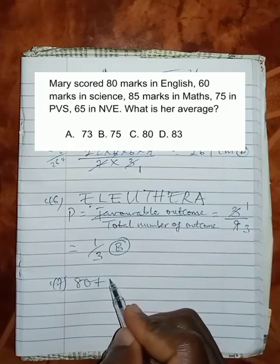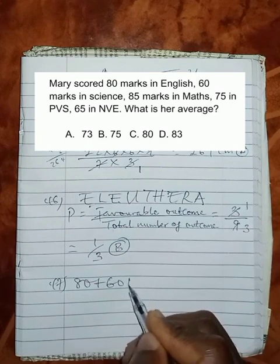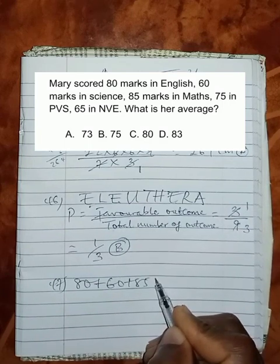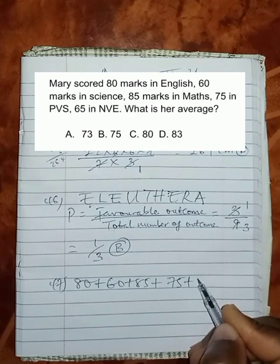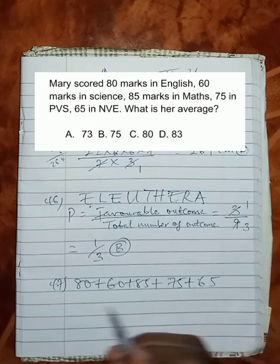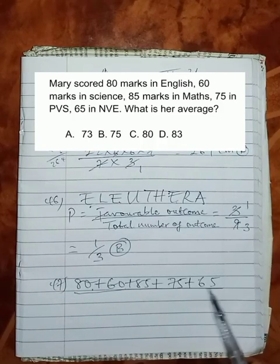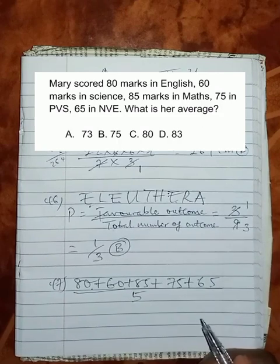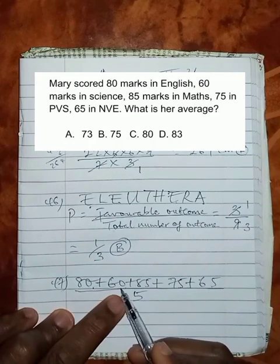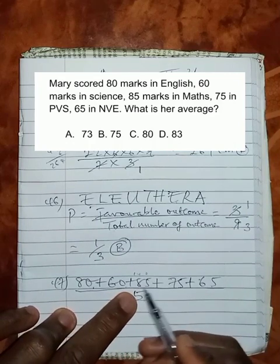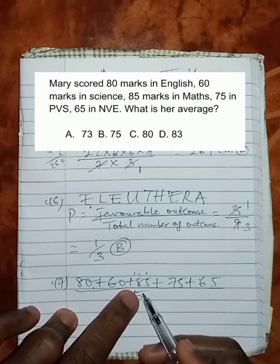That would be 80 in English plus 60 in Science plus 85 in Maths plus 75 in PVS plus 65 in NVE, divided by how many marks? 1, 2, 3, 4, 5. We are dividing by 5. If we add up this, 80 plus 60 is 140. 140 plus 85 will give us 225.